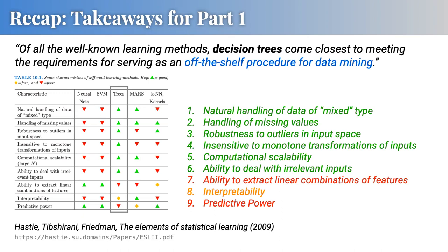Decision trees have a number of good properties: they can handle naturally categorical data and numerical data, they have a specific algorithm to handle missing values, they are robust to outliers, insensitive to any pre-processing like monotone transformations, already fast, and interpretable — though that gets a middle score.